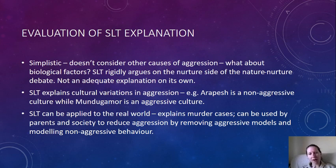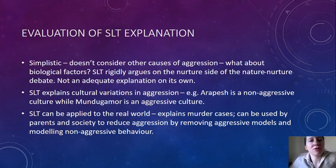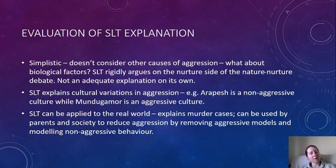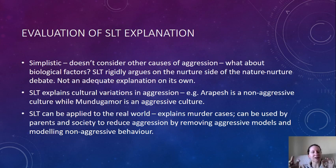A positive point is that social learning theory explains cultural variations in aggression. When we looked at evolutionary explanations, we noted that if that theory were true, aggression rates should be similar globally — but they're not. Social learning theory explains why different cultures have very different rates of aggression. For example, the Arapesh are a very non-aggressive culture, while the Mundugumor are very aggressive, and observing and imitating aggressive models explains these large differences.